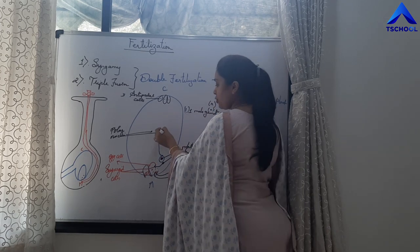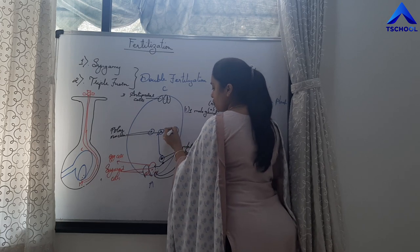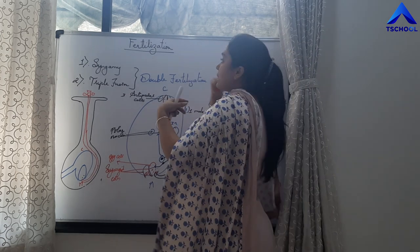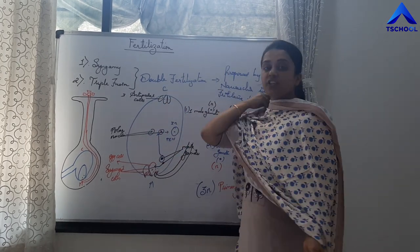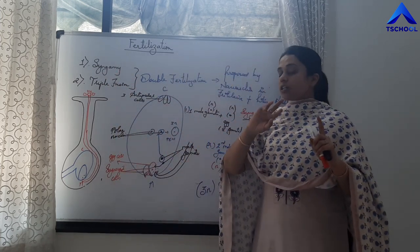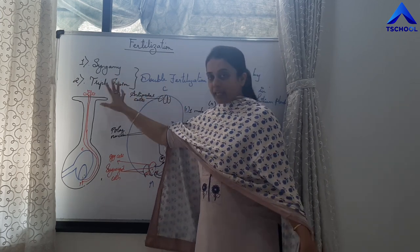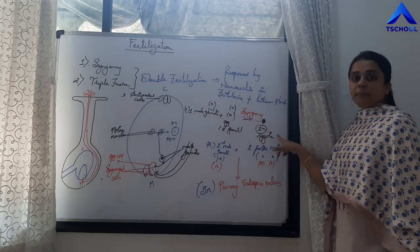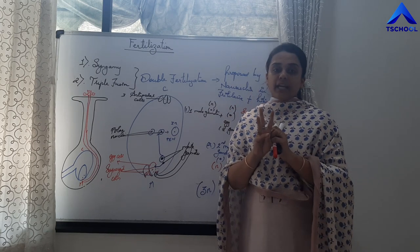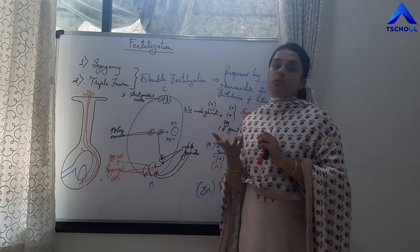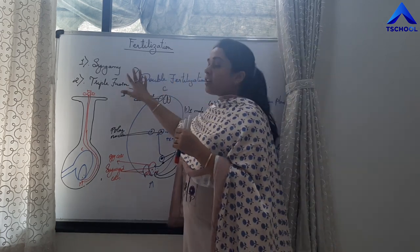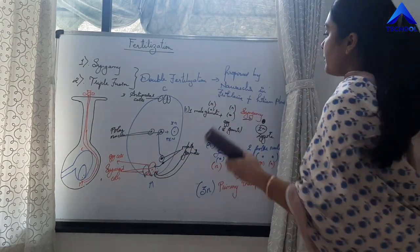This male gamete fuses with the two polar nuclei to form a triploid primary endosperm nucleus. These are the two events of fertilization — proposed by Navashin in Fritillaria and Lilium plants. The first event is syngamy: fusion of one male gamete and one female gamete to form a diploid zygote. The second event is triple fusion: fusion of three nuclei — one male gamete and two polar nuclei — forming a triploid primary endosperm nucleus. Syngamy and triple fusion together constitute double fertilization.